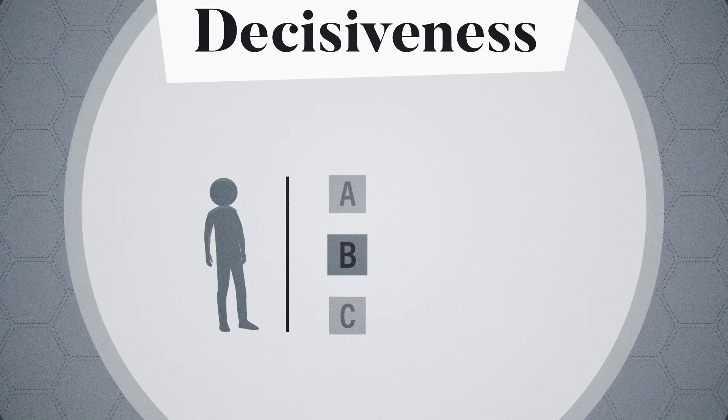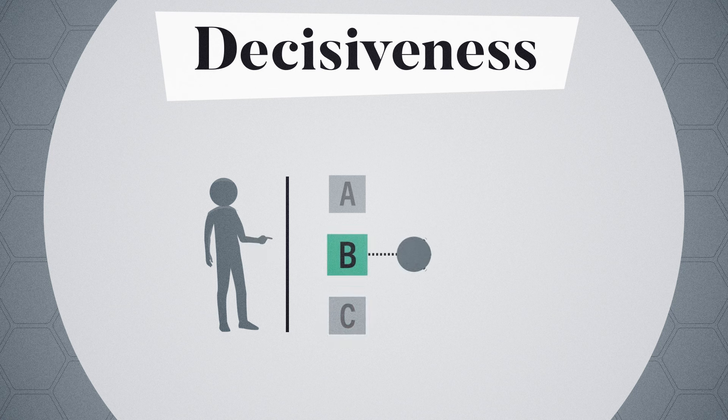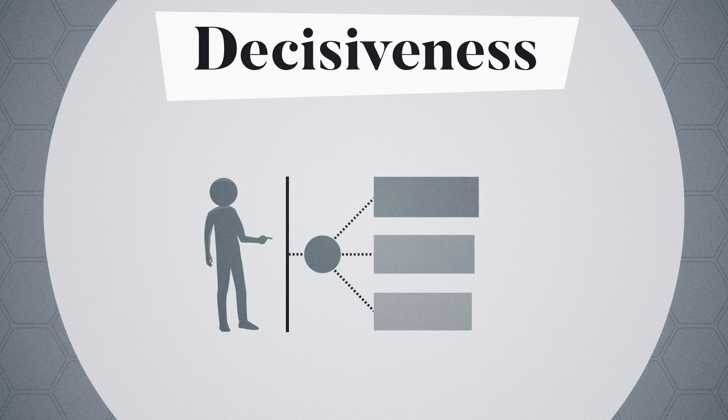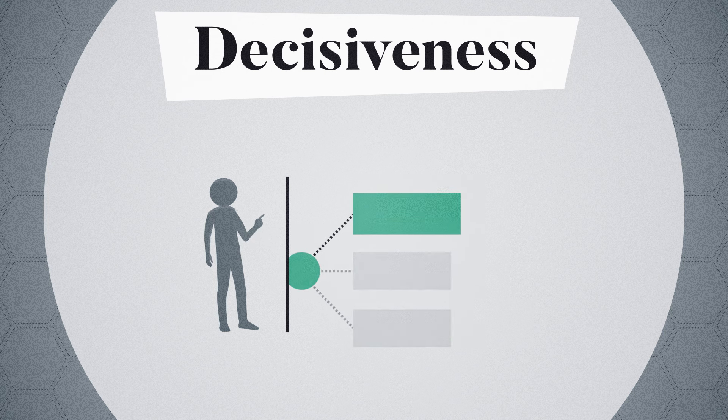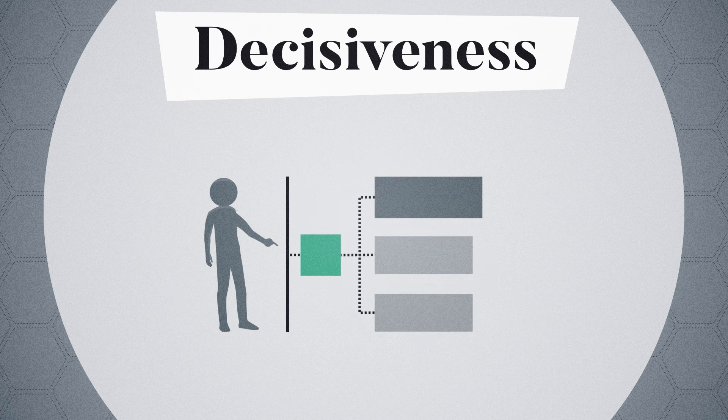They also have to make difficult decisions and stand by them. Entrepreneurs are responsible for overseeing every aspect of their business, from funding and strategy to resource allocation. Being decisive doesn't mean having all the answers, but rather confidently making decisions and seeing them through. If outcomes are less than favorable, taking corrective action is just as important.